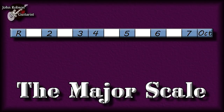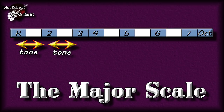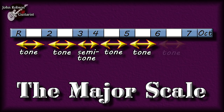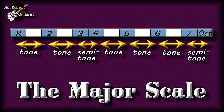The intervals of the major scale, beginning on any chosen root note: go up one tone and that takes you to the second note; another tone takes you to the third; a semitone takes you to the fourth; another tone to the fifth; another tone to the sixth; another tone to the seventh; and a final semitone brings you back to the root note an octave higher.